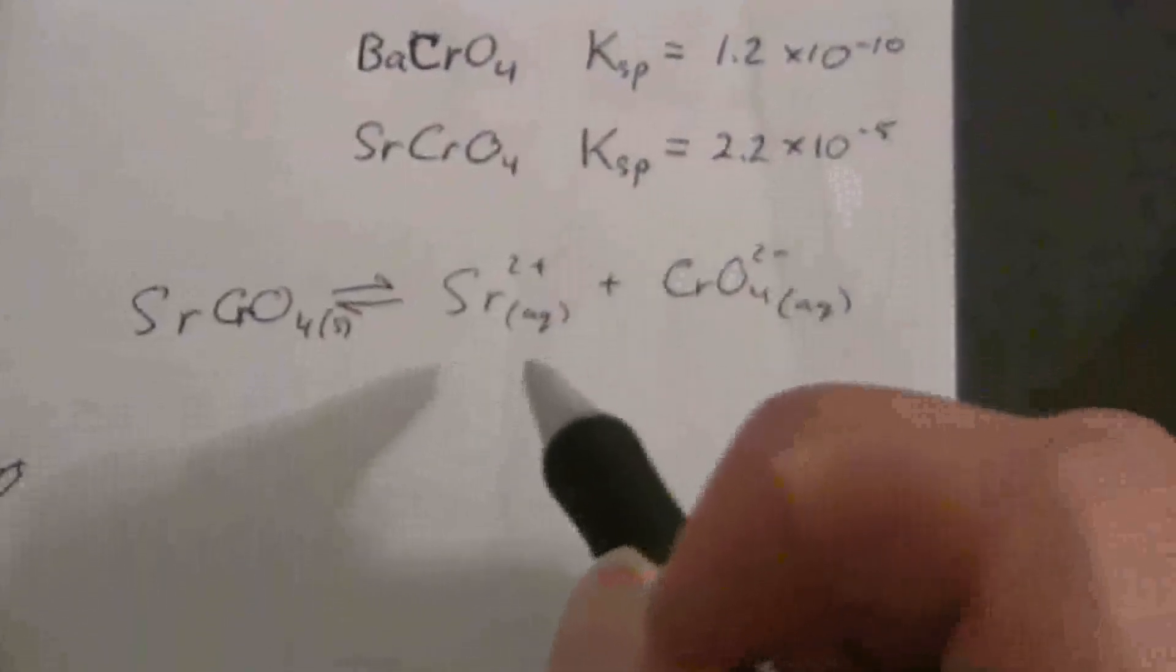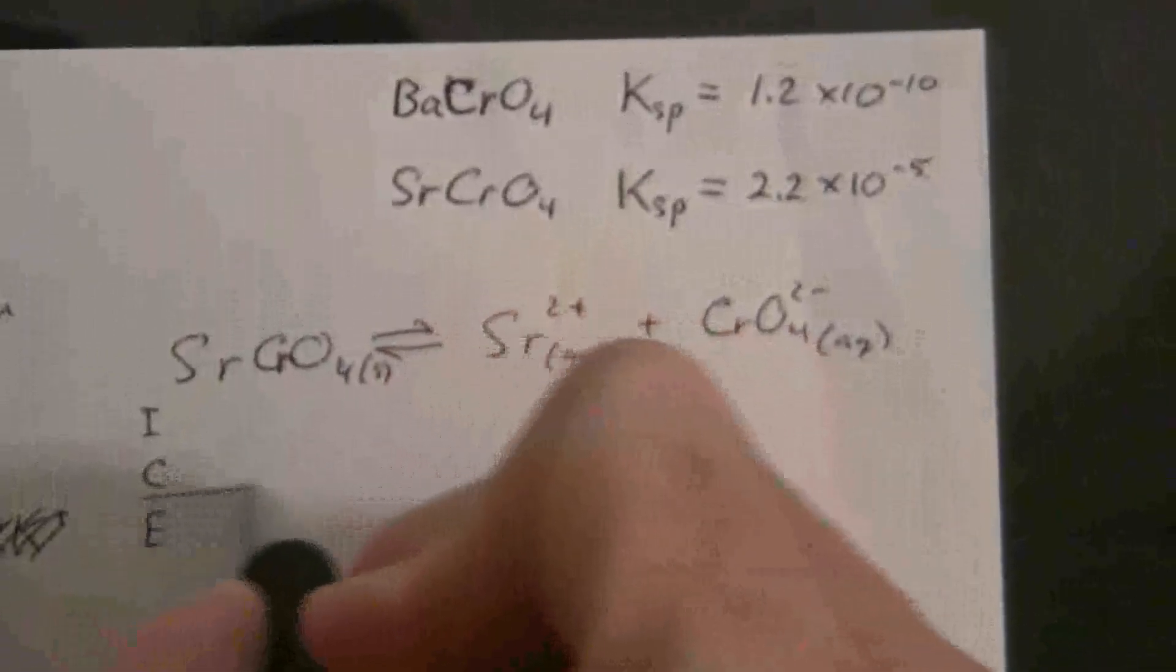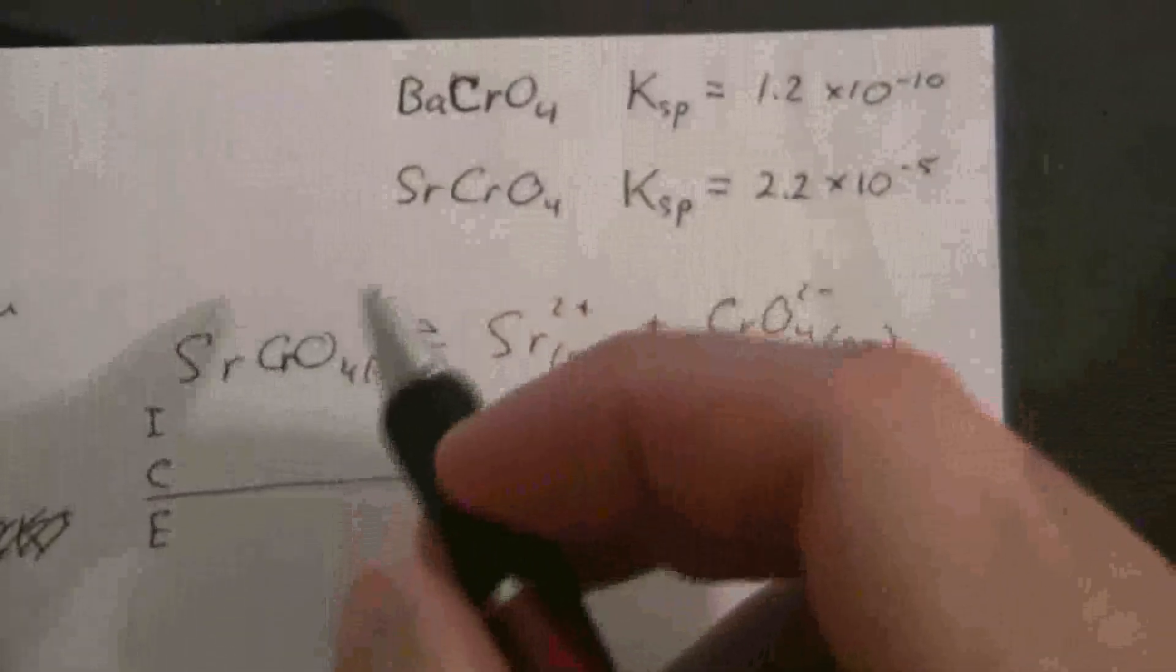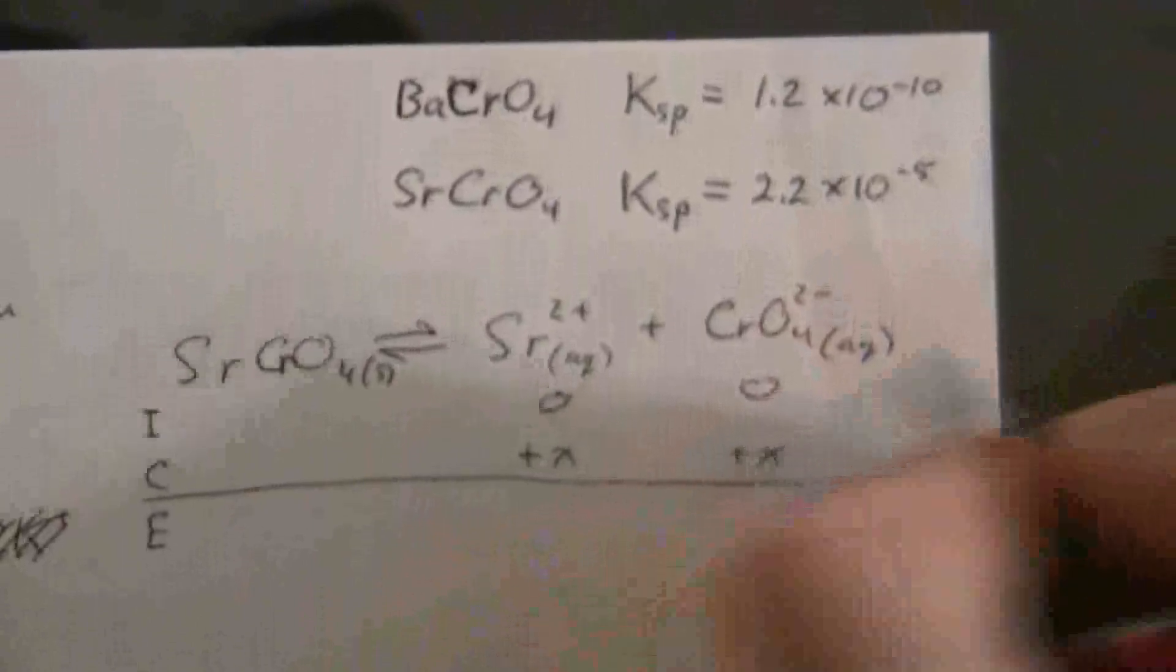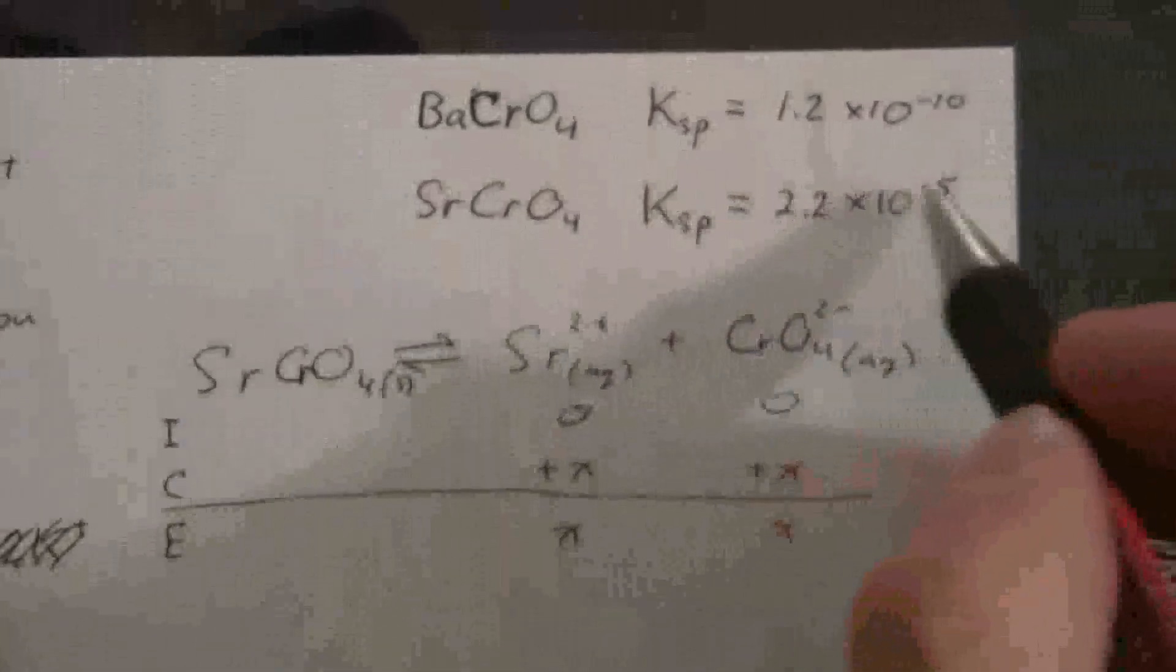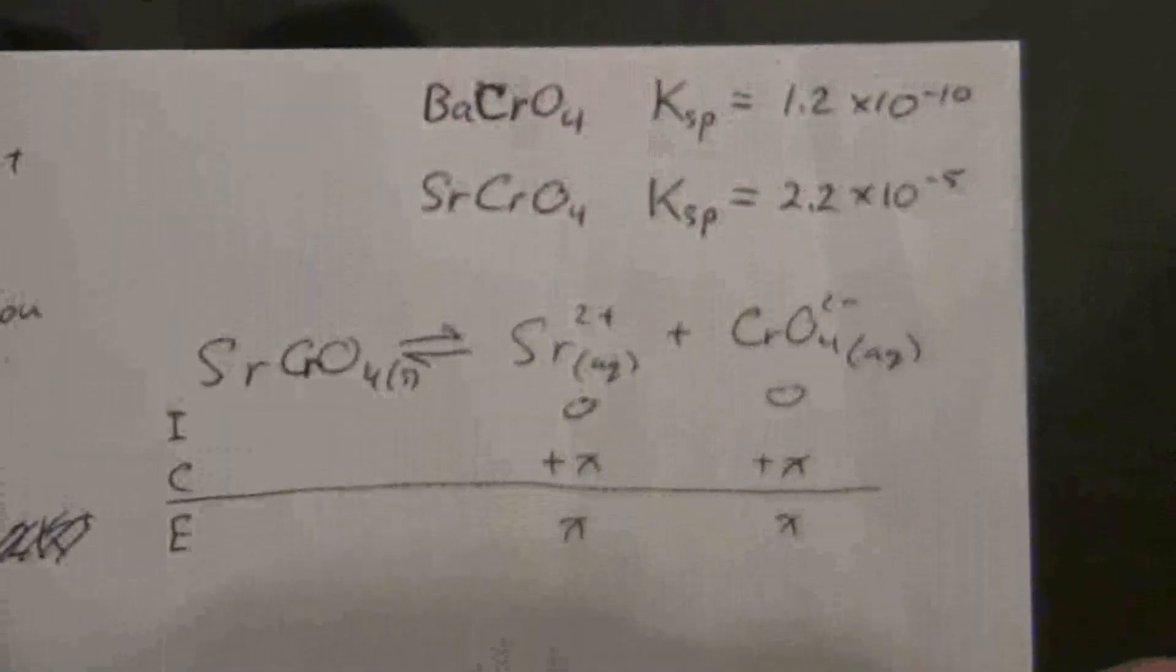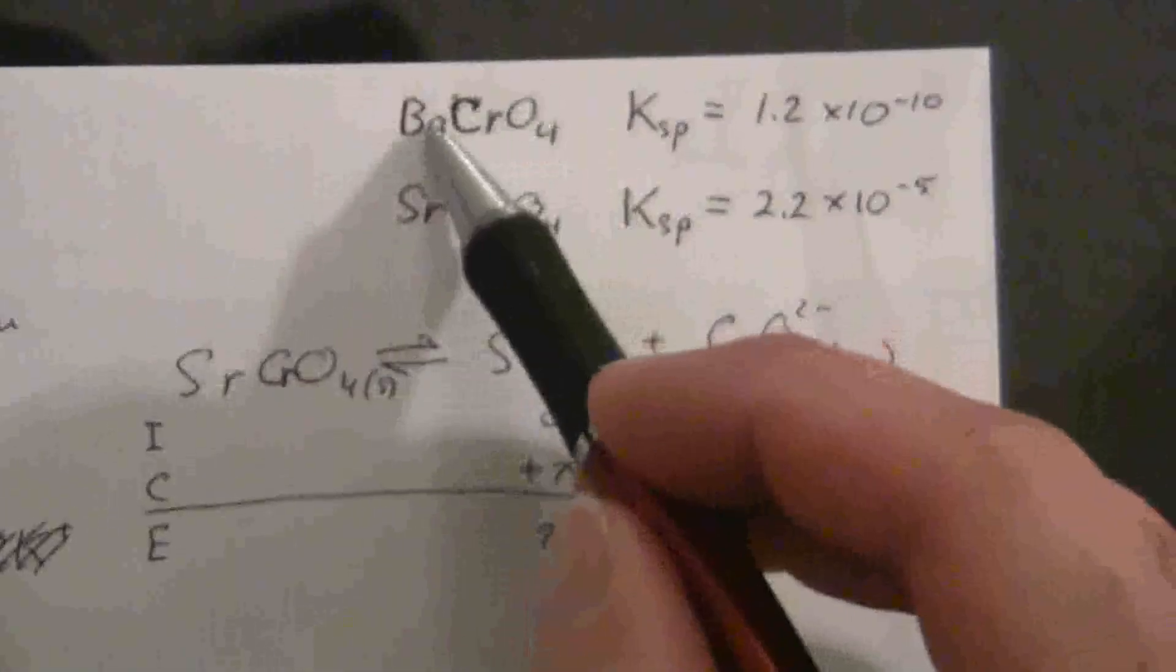So initially, if we did just a quick ICE table here, you'll see we have zero to start out with because it's all the solid salt. And then we're going to dissolve some of that, and that will be the amount we have at equilibrium. So our Ksp is equal to x squared, so x is just the square root of the Ksp. That's pretty straightforward, and it's one to one for both of these.